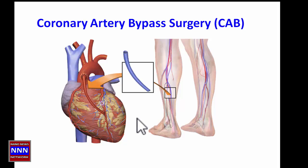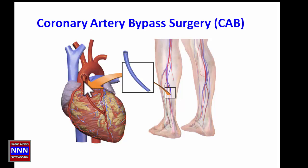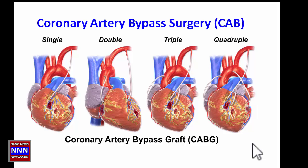During coronary artery bypass surgery, the surgeon takes the long vein running along the leg and separates it into small segments. One end of the short segment of vein is attached to the aorta, and the other end is attached to the artery beyond the blockage — bypassing it. Instead of blood going through the narrowed artery, blood now comes through this vein, supplying blood to the heart muscle beyond the area of blockage. Similarly, other vessels are bypassed.